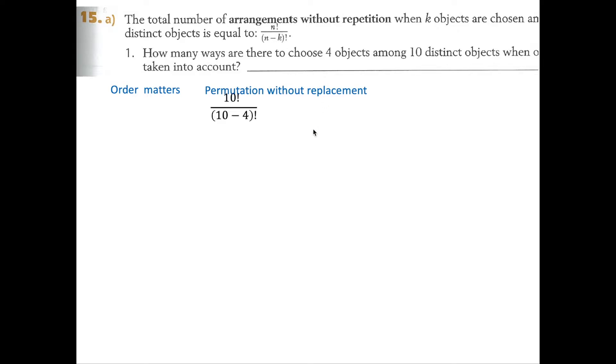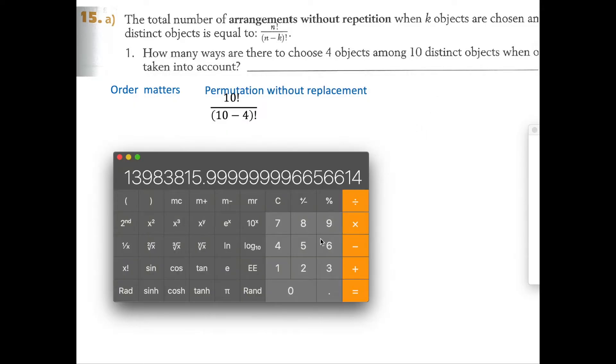That's going to be 10 factorial over 6 factorial, which is going to be 10 times 9 times 8 times 7. You can do 10 times 9 times 8 times 7, or you can just do the shortcut. 10 factorial divided by 6 factorial is 5040.